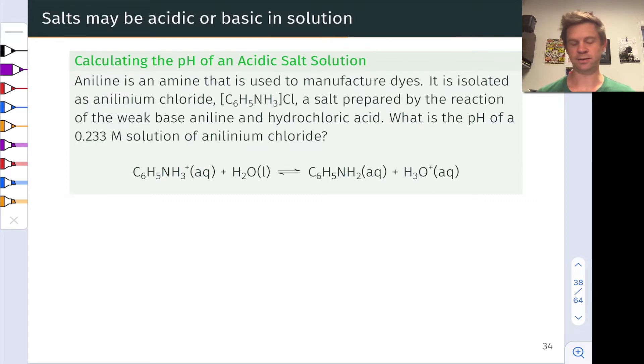Anilin is an amine that's used to manufacture dyes, and it's isolated as the salt, anilinium chloride. This consists of a positively charged anilinium cation along with the chloride anion. We're familiar with chloride, Cl-, which implies that the anilinium cation has to have a charge of positive 1.